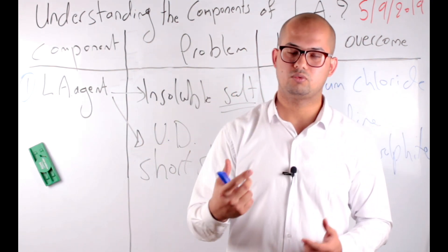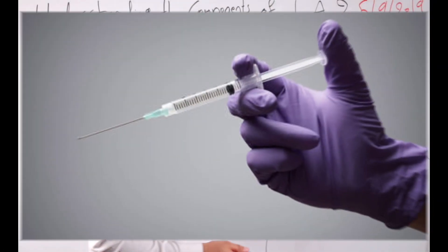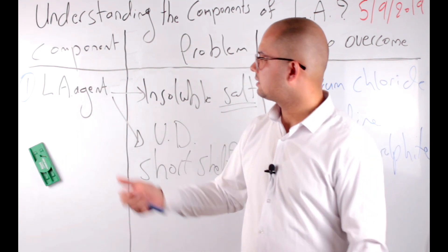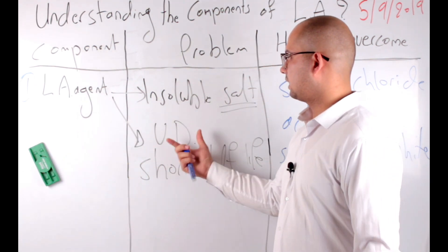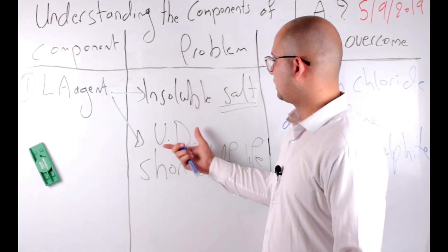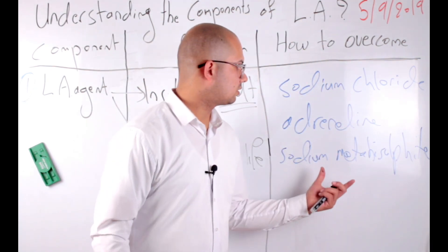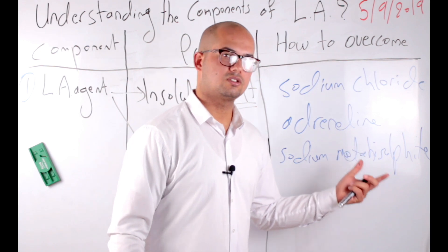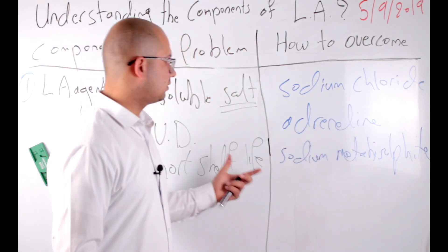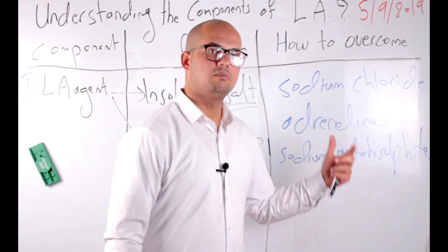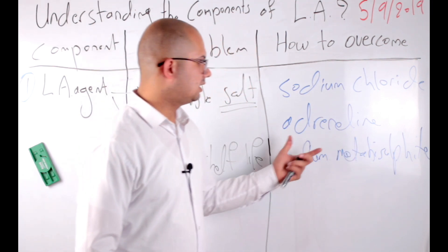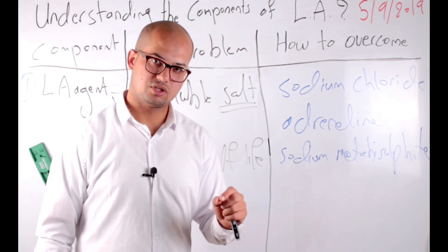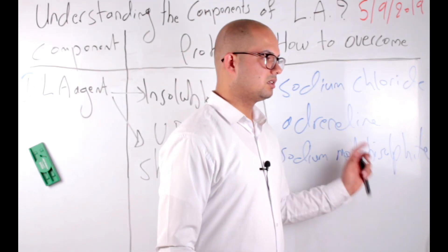To summarize: local anesthetic agent is in nature a salt — we cannot inject a salt, so we add sodium chloride to make it injectable. Local anesthetics have a vasodilatory effect, so we add a vasoconstrictor — the best one being adrenaline. Adrenaline is unstable and easily oxidized, decreasing shelf life, so we add a reducing agent — sodium metabisulfite — to prevent the oxidation reaction. We end up with four components.